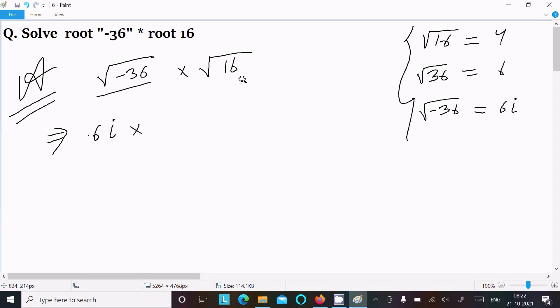Times root(16), we can write 4. After that, here this is now 6i times 4, that is 24i. So i, that indicates imaginary number.